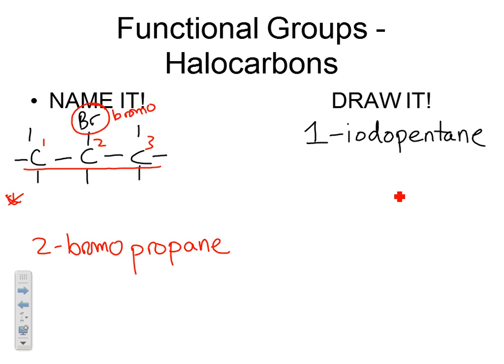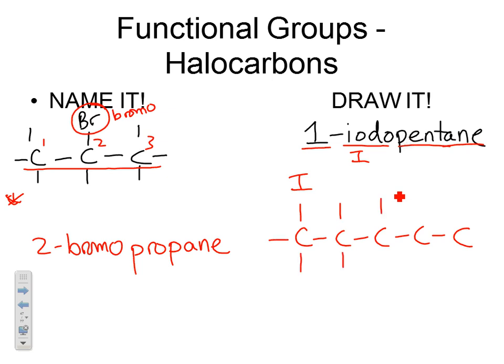If drawing a halocarbon, start with the prefix: it's pent-, so draw five carbons — one, two, three, four, five. The suffix -ane means all single bonded, so no changes needed there. Iodo means iodine (I), attached on the number one carbon. Remember, halogens only make one bond. Make sure all carbons get a total of four bonds.